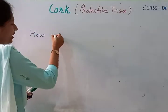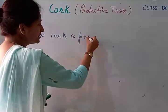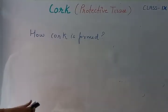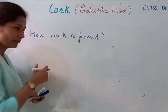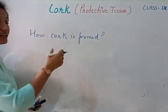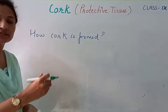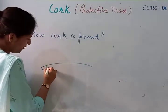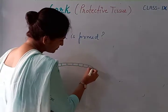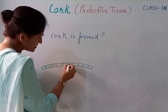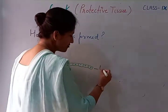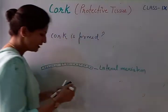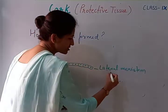Now, how is cork formed? We will take a very brief look at this because it is not a major part of the syllabus, but we are going to talk a little about it. As the plant keeps going towards secondary growth and becomes woody, what is going to happen? There is a particular layer of meristematic cells — these are lateral meristem cells — and this lateral meristem is going to form a cambium.